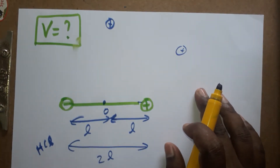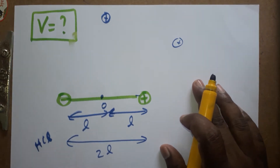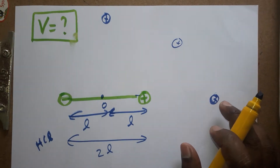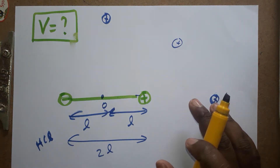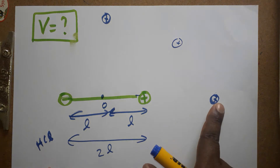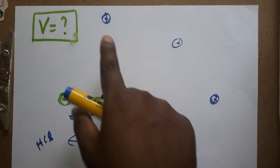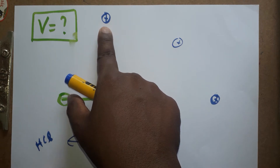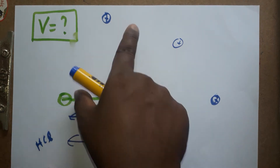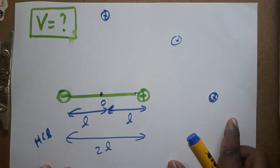The axial line can also be called the 'end-on side.' The equatorial line can also be called the 'broadside-on' or 'midpoint perpendicular' line.